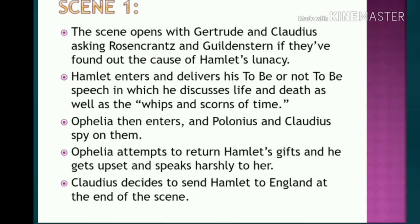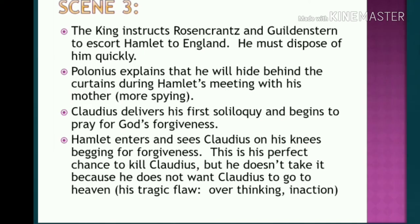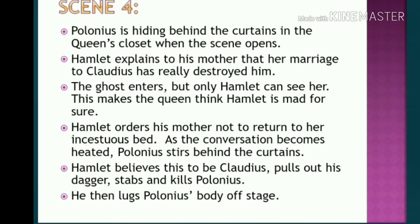In the second scene, Hamlet begins to rehearse with the players and instructs them not to overact during the play. In the third scene, the king instructs Rosencrantz and Guildenstern to escort Hamlet to England — he must dispose of him quickly. In the fourth scene, Polonius is hiding behind the curtain in the queen's closet.